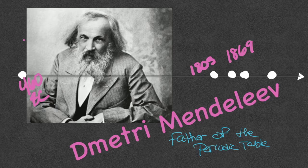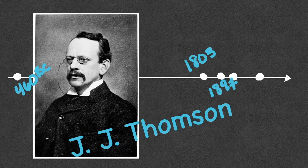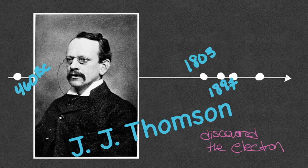I wanted to give credit to him because that's where we are in the timeline — Dmitry Mendeleev, father of the periodic table. Now, this is not what the modern periodic table looks like, but he gets credit for being the first. Traveling down to 1897, we meet J.J. Thompson, who gets credit for discovering the electron. This is the first time someone suggested the atom is actually made up of subatomic particles.